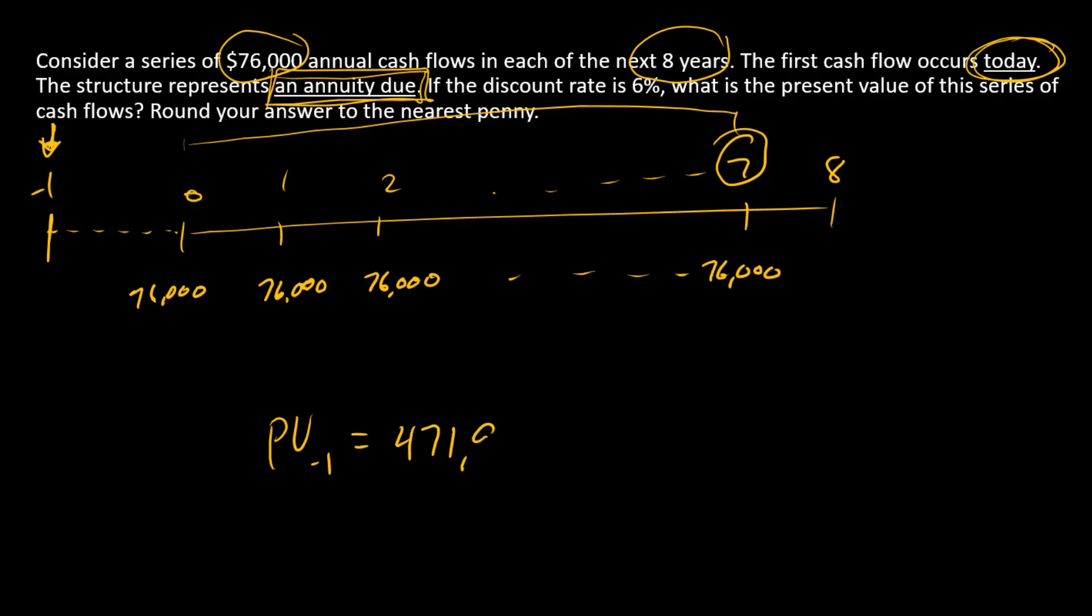So that's PV at minus one, but what do we want? We want the present value today at time zero. Well, if we got a number right here and we need a number at time zero, we can just compound forward one period.